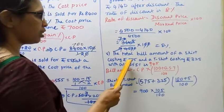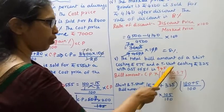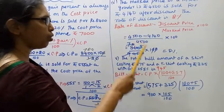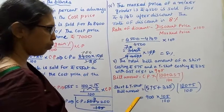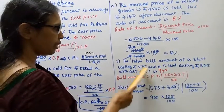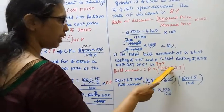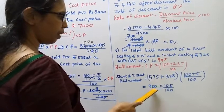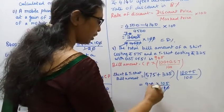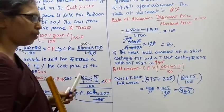Fifth subdivision: the total bill amount of a shirt costing rupees 575 and a T-shirt costing rupees 325 with GST of 5%. 100 plus 5% GST: 575 plus 325 equals 900. 900 into 105 by 100 — cancel two zeros: 9 into 105 is 945. Answer: Rs. 945.